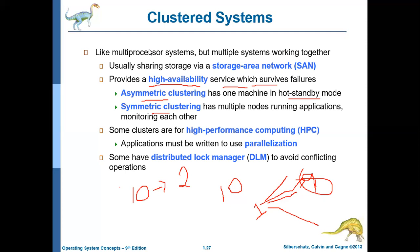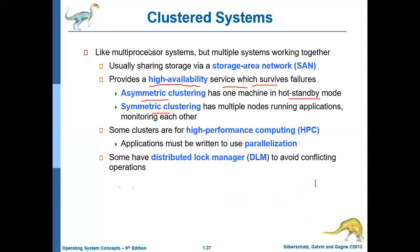The second type is symmetric clustering. In symmetric clustering, you have multiple nodes — different computers are called nodes. All nodes run some applications; there is no node in standby mode. Every node runs some application and every node monitors each other. If you have 10 nodes, all 10 nodes perform some function and also monitor each other. If, say, node 8 fails, whatever work was being carried out by node 8 will be distributed among the remaining nodes.